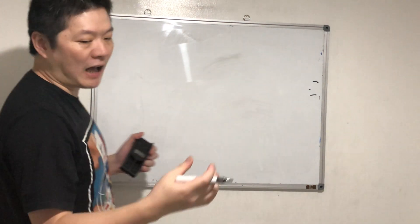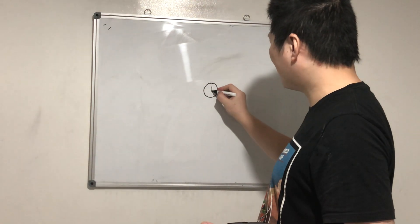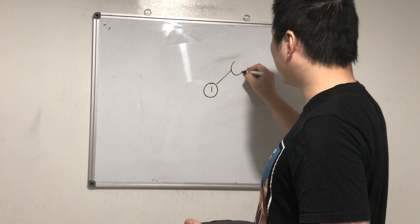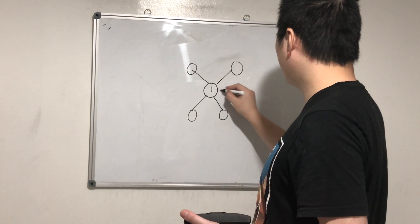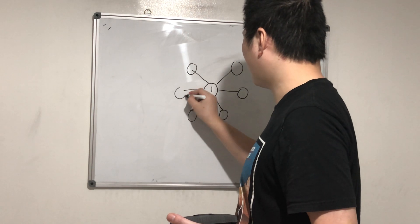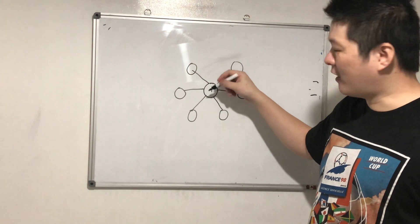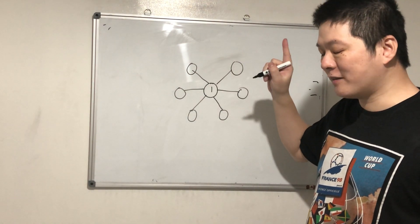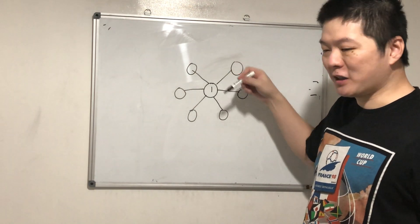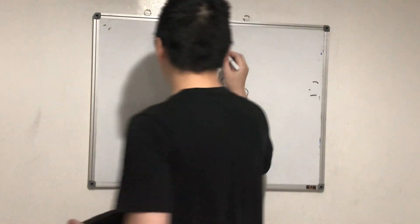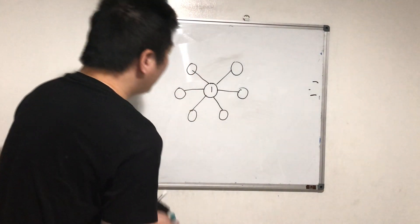So the task today is simple. You're given a star graph — it only has one node in the middle and then many edges. Basically, one common node connects to all the rest of the nodes, and there is only one edge between each outer node and the middle node.